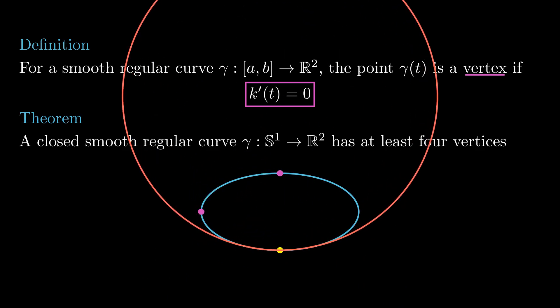The four-vertex theorem says that each simple closed smooth regular curve has at least four vertices. The proof goes as follows. By the lemma we proved, there is a point v1 for which the oscillating circle is supported by gamma from the outside.